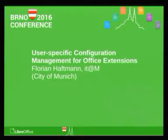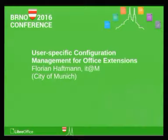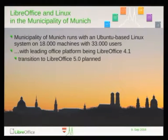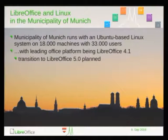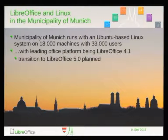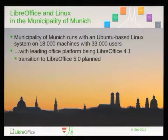Hello everybody, thanks for coming. I'm Florian Huffman, working for the city administration of Munich — more exactly the IT service provider for the city of Munich, IT@M. To understand what I will talk about, it is necessary to dive into the context. We at Munich are running an Ubuntu-based Linux distribution on about 18,000 machines with about 33,000 users. Our leading office platform is LibreOffice 4.1, and the transition to LibreOffice 4.0 is currently in planning.